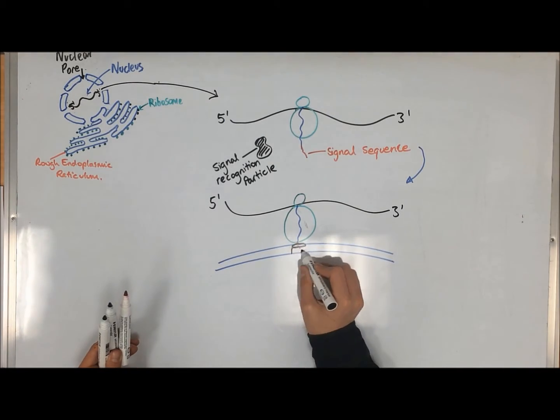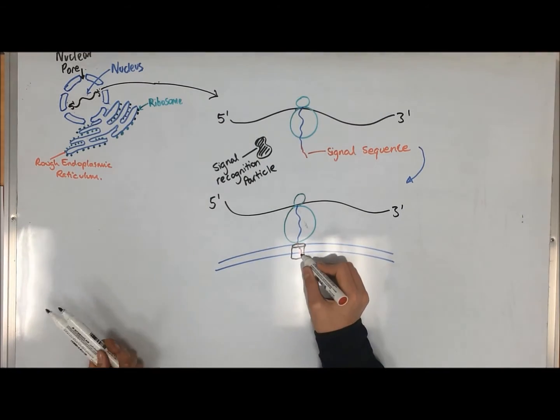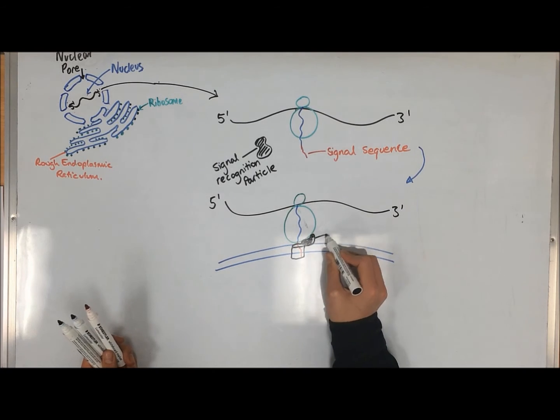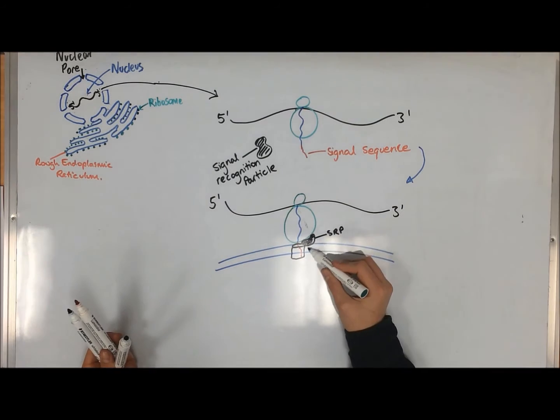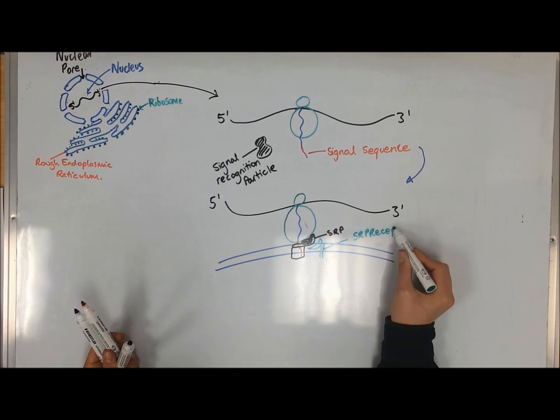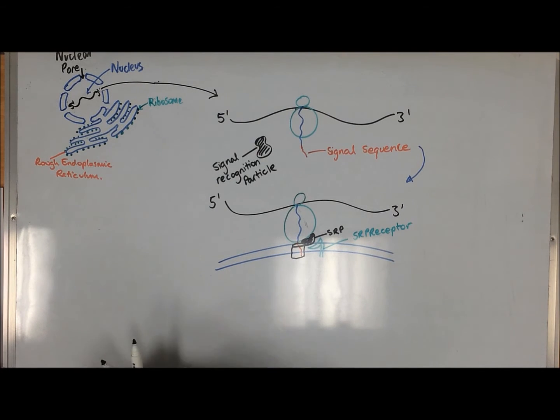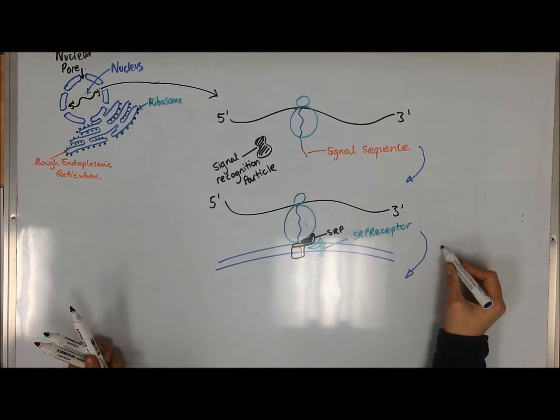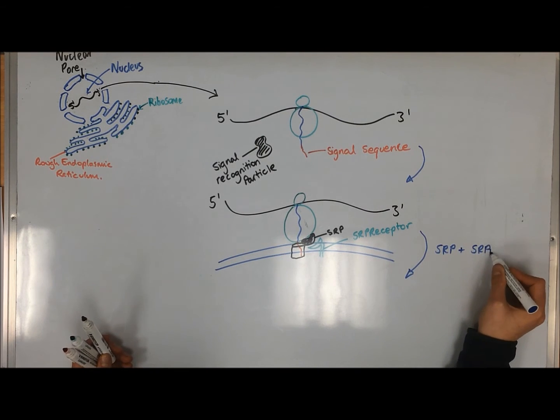The signal recognition particle is then recognized by an SRP receptor present in the RER membrane and becomes bound. To compensate for this process, protein synthesis is slowed down to allow the ribosome to bind to the membrane.